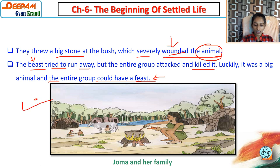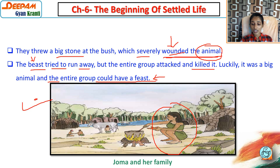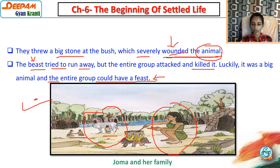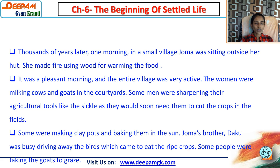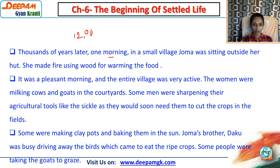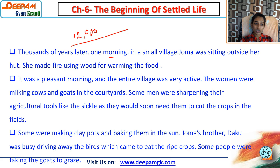Now there is another story - the family of Joma. In the picture you can see Joma and her family. One girl is Joma, and with the help of fire she cooked food. There is also domestication of animals shown. We can say social life starts and we see the beginning of settled life. This story takes place thousands of years later than Gomatu's, after the 12,000-year-ago period.